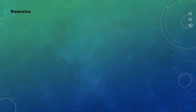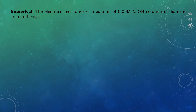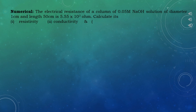First numerical: The electrical resistance of a column of 0.05 molar sodium hydroxide solution of diameter 1 cm and length 50 cm is 5.55 × 10³ Ohm. Calculate its resistivity, conductivity, and molar conductivity. Given: resistance R equals 5.55 × 10³ Ohm, molarity of solution is 0.05 molar.